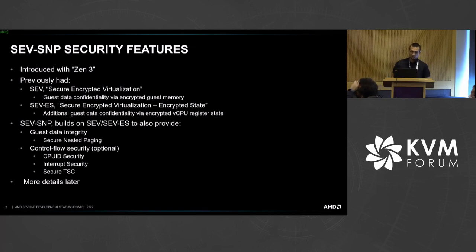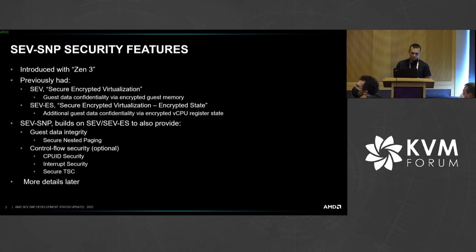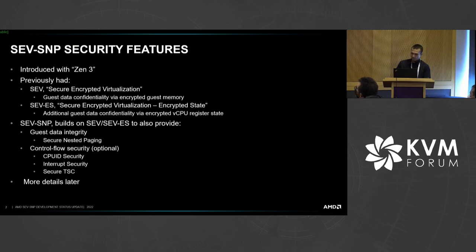A quick overview of SEV-SNP and the features that it adds. This was introduced with the Zen 3 CPU architecture. Previously, SEV provided guest data confidentiality through encrypted guest memory, and SEV-ES extended that by encrypting the vCPU register state. With SEV-SNP, we build on SEV and SEV-ES to also provide guest data integrity through the secure nested paging feature.